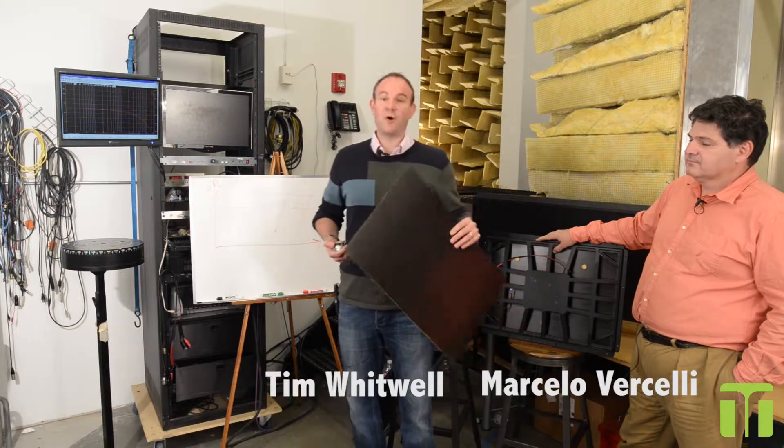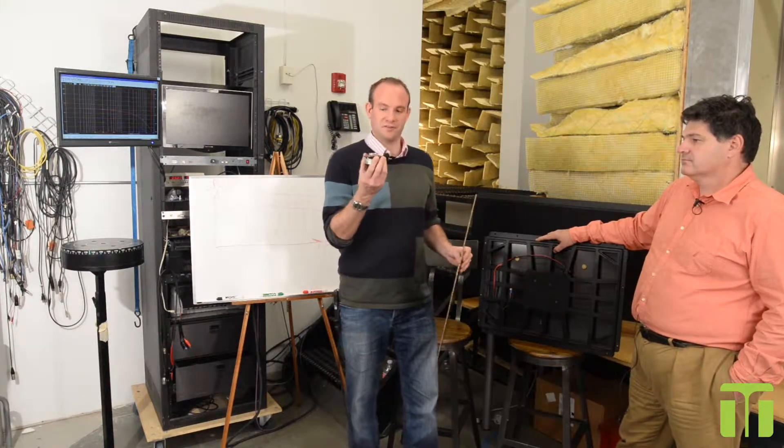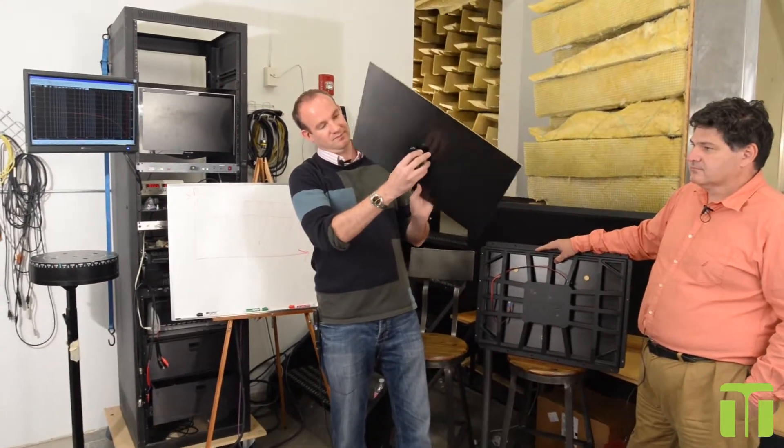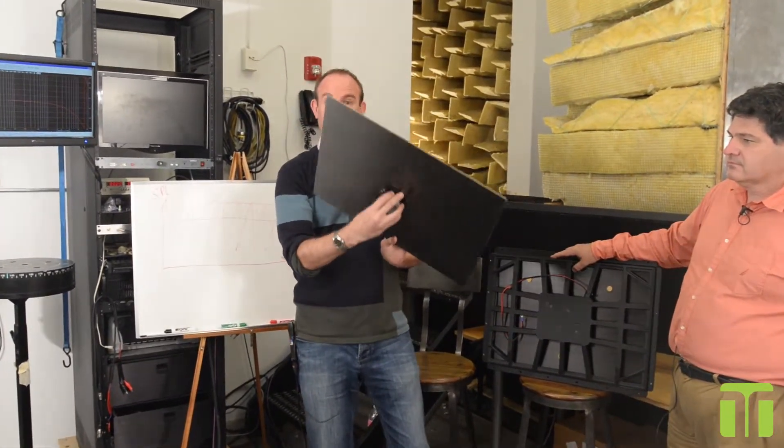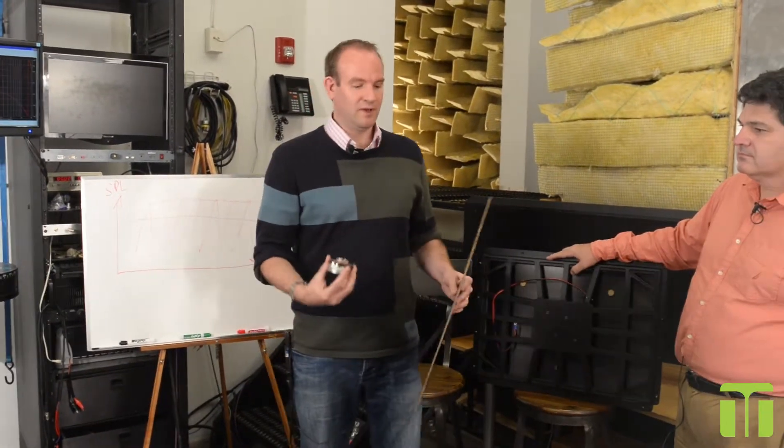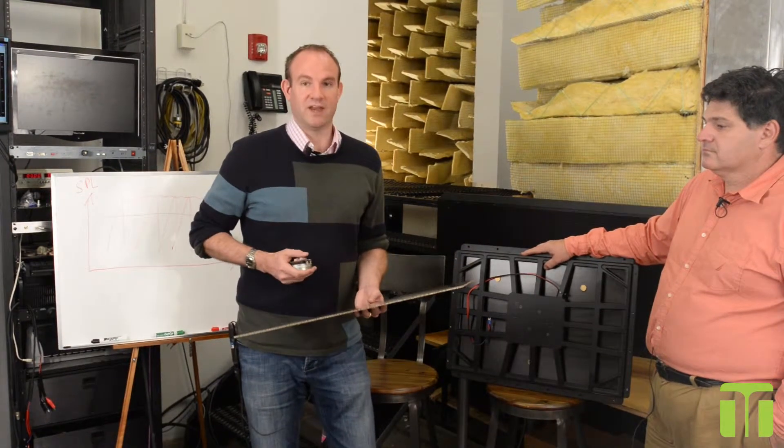When we vibrate a DML, we take an exciter—this transducer—and attach it to the DML like so. There are certain locations that give us a more optimized response, and we can also attach multiple exciters for more power.